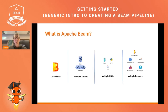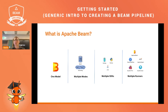Beam provides one programming model which lets you run multiple modes of data. On one hand we have bounded data, which is processed by a batch job, and on the other hand unbounded data, which is processed via streaming. Batch data sources can be a file or a database, and streaming sources can be messaging services, for instance.